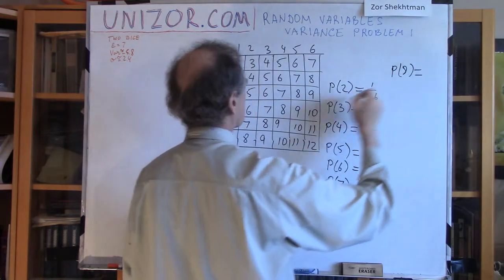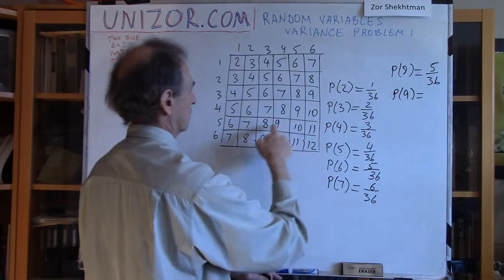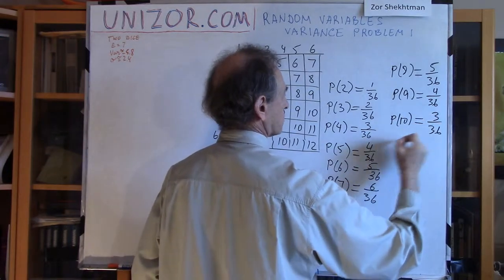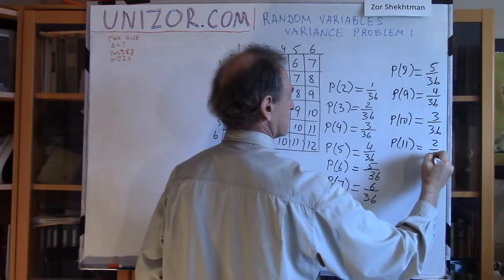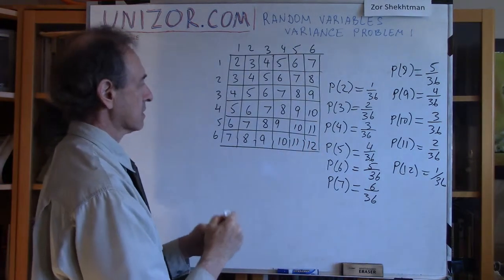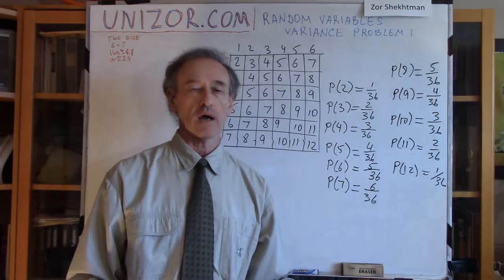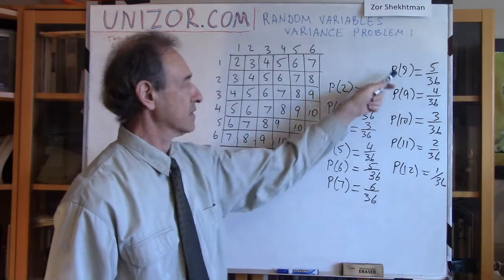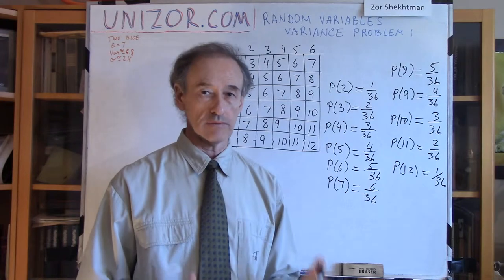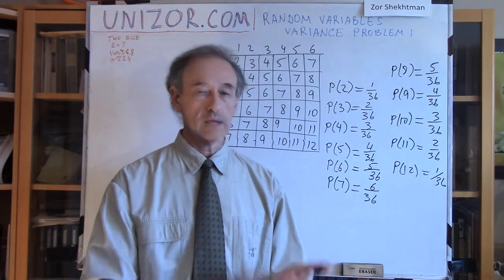The probability of 8 is 5/36, probability of 9 is 4/36, probability of 10 is 3/36, probability of 11 is 2/36, probability of 12 is 1/36 — because there is only one case, 6 and 6, when we can get 12. So this is a full specification for our random variable. It takes values 2, 3, 4, 5, 6, 7, 8, 9, 10, 11, 12, and these are the probabilities with which these values are taken.